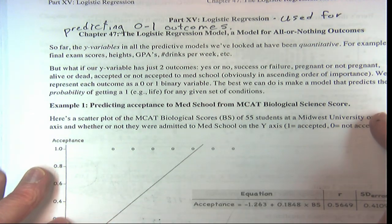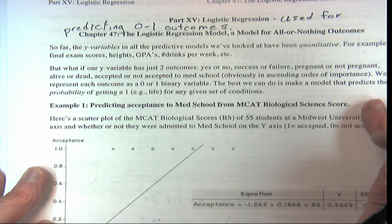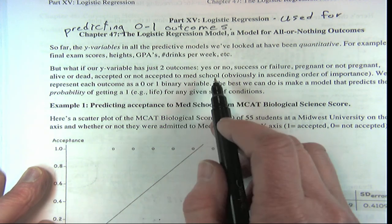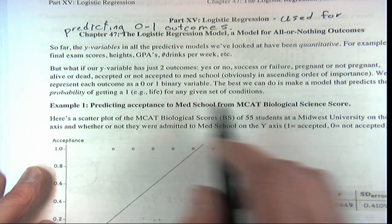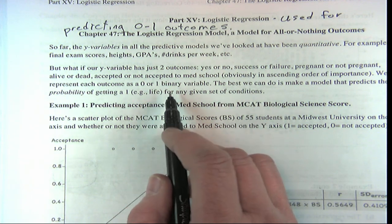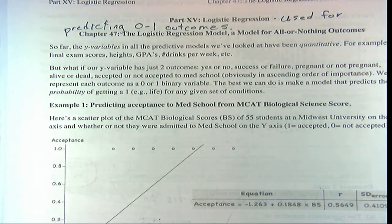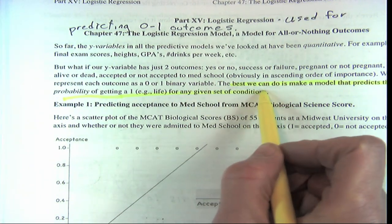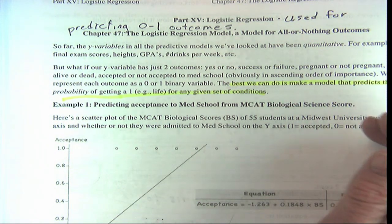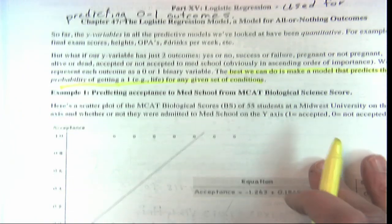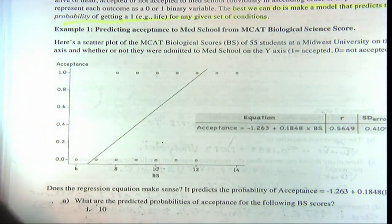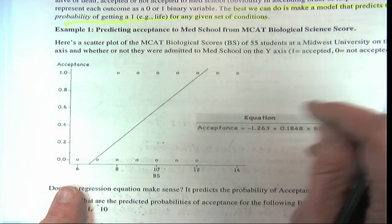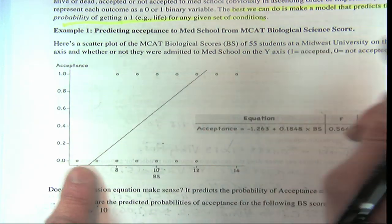Very often we are interested in 0, 1 outcomes. If our variable has just two outcomes like yes or no, and we represent it with a 0 or 1 binary variable, the best we can do is make a model that predicts the probability of getting a 1 for any given set of conditions — the probability of success. If we tried to fit an ordinary linear regression, look what would happen.